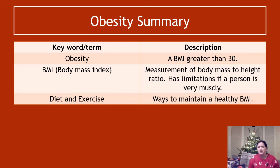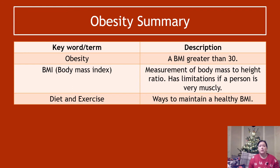To summarize for obesity: obesity is a BMI greater than 30. BMI is a measurement of body mass to height ratio. It has limitations if the person is very muscly. Diet and exercise are ways to maintain a healthy BMI. The formula to know is BMI equals your weight in kilograms divided by your height in meters squared — that is a formula you do need to know.